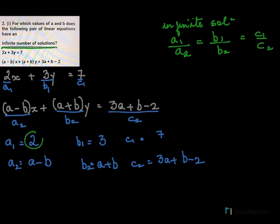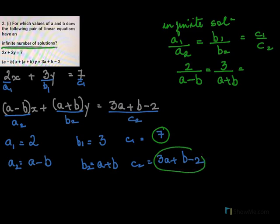So let's substitute. What is A1? 2. A2 is this, so I put 2 over A minus B equals. Now this is my B1 and B2, so that is 3 over A plus B. Now for C1 by C2, this is C1 and this is my C2, so it is 7 over 3A plus B minus 2.